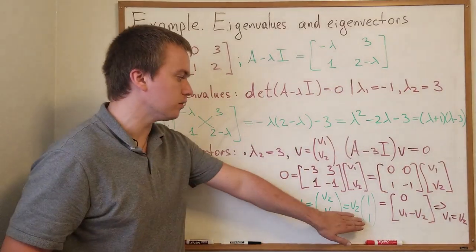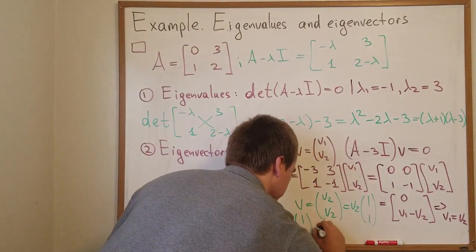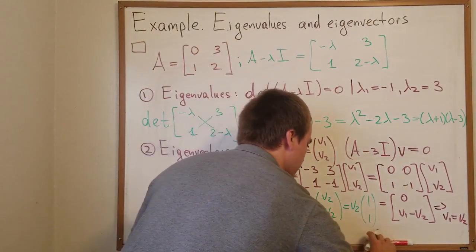So I can see that null is spanned by just one vector 1, 1. So from here follows that 1, 1 is eigenvector for 3.